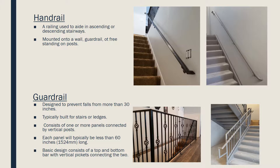Guardrails are railing systems designed to prevent falls from more than 30 inches, commonly built for stairs or ledges, and usually consisting of multiple panels connected by vertical posts. Each panel will typically be less than 60 inches wide and have a top and bottom bar with vertical pickets connecting the two. Two different guardrails are shown in the pictures on the bottom — the left is in a house, and the right is in a commercial stair tower with a handrail mounted on it.